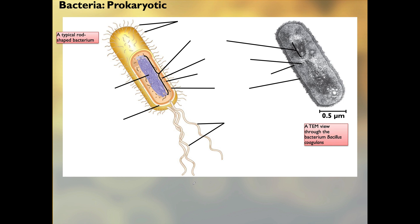We're starting with bacteria as our prokaryotic model organism. Here's a typical rod-shaped bacterium — Bacillus coagulans — and a TEM view showing its inside. First, we have a bacterial chromosome visible as a purple, loose arrangement — almost like purple spaghetti — that's its DNA. It's found in what we call the nucleoid region. There's no organized nucleus; the DNA just kind of floats around in the interior of the cell in a general area called the nucleoid region.